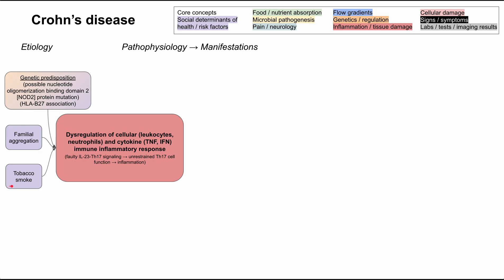In addition, tobacco smoke and smoking makes it worse. There are also environmental or microbial triggers that either start the disease or exacerbate it. Infections, for example, can be responsible for flares in Crohn's disease for people who already have it.